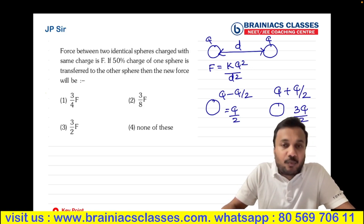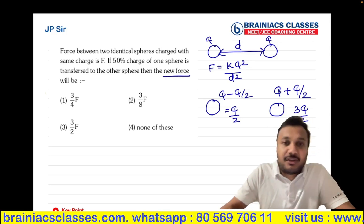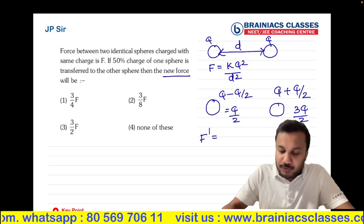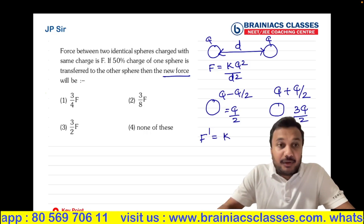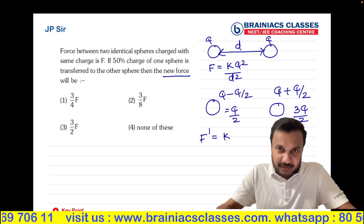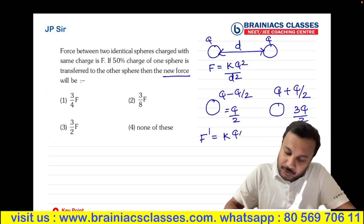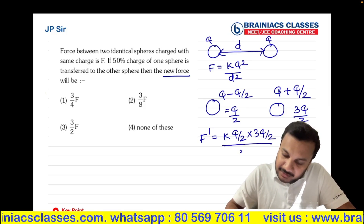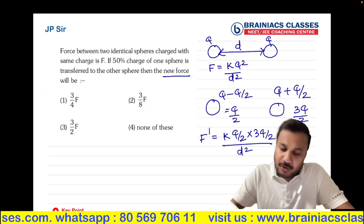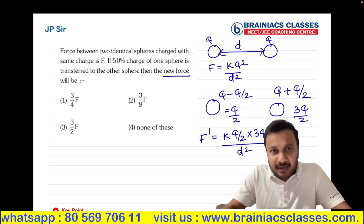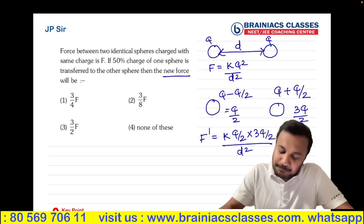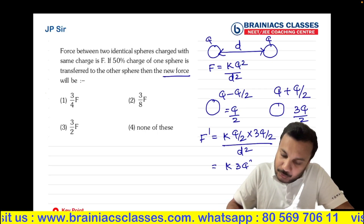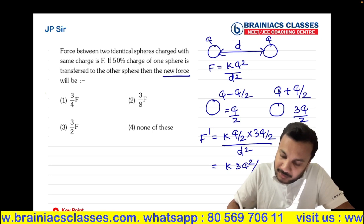The question is asking: what is the new force? Using Coulomb's law, F' = K·Q1·Q2 / R². The new charges are Q/2 and 3Q/2, and the distance remains the same D. So F' = K × (Q/2) × (3Q/2) / D² = K × 3Q² / 4D².